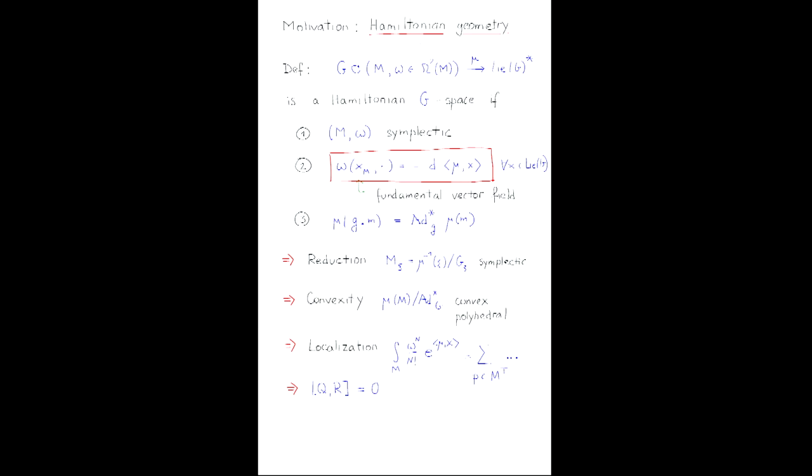Let me pass to a mathematics motivation. This goes under the name of Hamiltonian geometry. This is a very beautiful and by now rather standard piece of math. Here is a definition. Suppose you have a manifold M together with a two form on M called omega, together with an action of a group G, and a function, a map from M called mu to the dual of the Lie algebra. This is called the Hamiltonian G space if it satisfies several axioms. First of all, M omega is symplectic. So omega is non-degenerate and closed. Then there is a moment map equation: if I substitute the fundamental vector field for some element of Lie algebra of G into the symplectic form, I get the differential of the pairing of the map mu with this element x. And also the moment map is equivariant under the action.